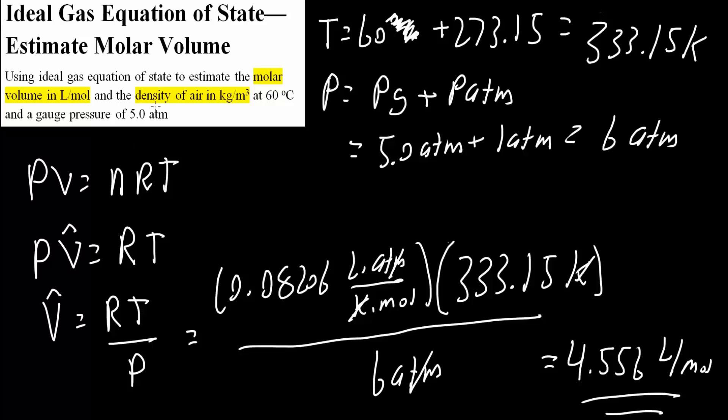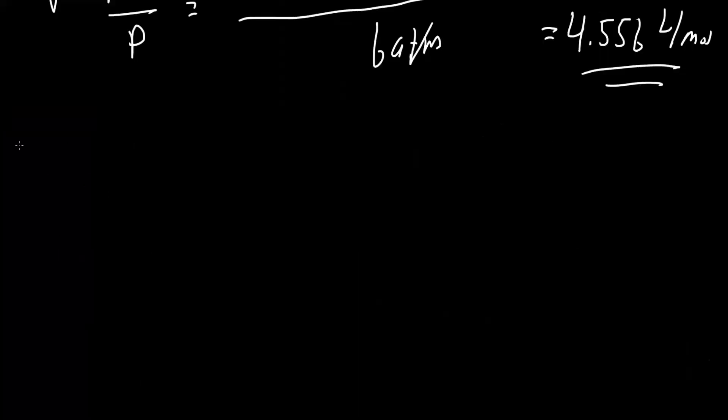Next, we will calculate the density of air in kilograms per meter cubed. Using this information, we could say that 1 mole of air divided by 4.556 liters. This is saying we have 4.556 liters per mole of air, or 1 mole of air per 4.556 liters. The unit for this would be moles over liters. This will help us get density.